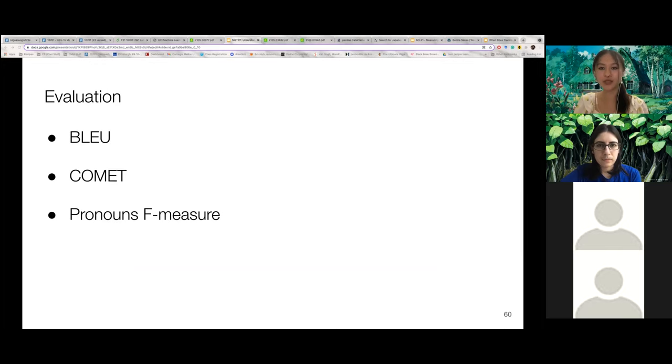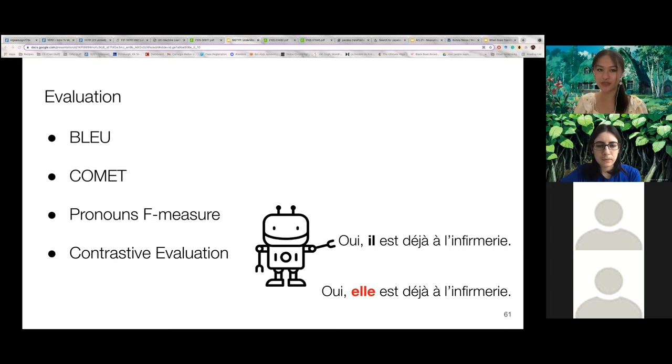Which is why we also compute the mean word F-measure of translations of the ambiguous pronouns with respect to the reference pronouns. And we also perform contrastive evaluation, where we measure how often the model assigns the higher probability to the correct translation than the translation where the ambiguous pronoun is incorrect.